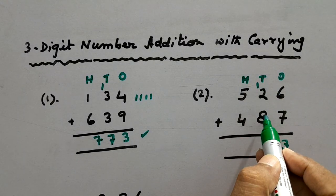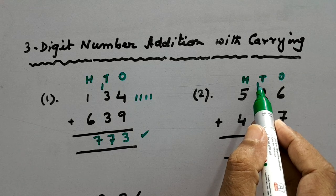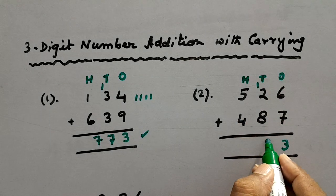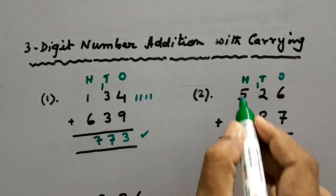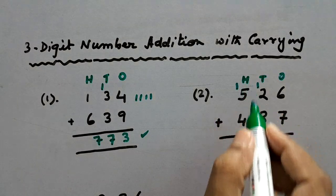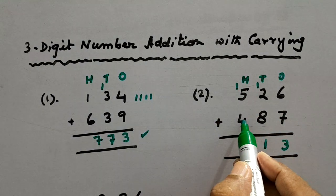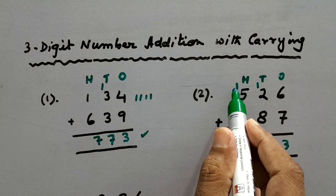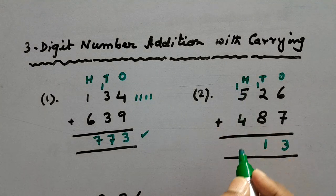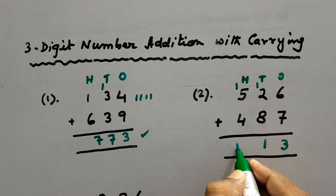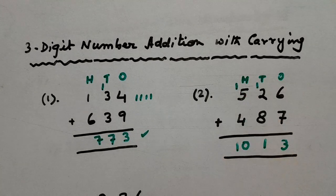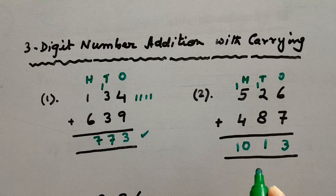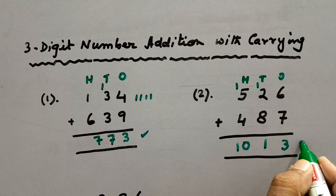Now 8 plus 2 is 10, plus 1 carried is 11. For 11 tens, we'll write 1 here and carry 1 to the hundreds column. Now here 4 plus 5 is 9, plus 1 carried is 10. So we'll write 10 in the hundreds column. So 1013 is the answer of this addition.